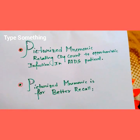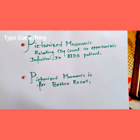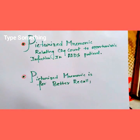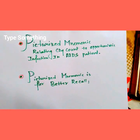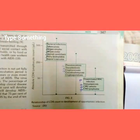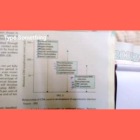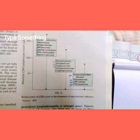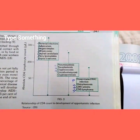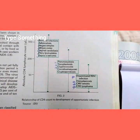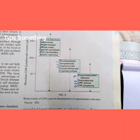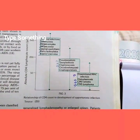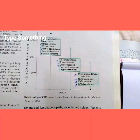We have to know the chart first — the chart from a standard textbook like Harrison or Park. This is the chart as given in Harrison, and there are several names we have to remember and also recall. With the picturized mnemonic, it becomes very easy.